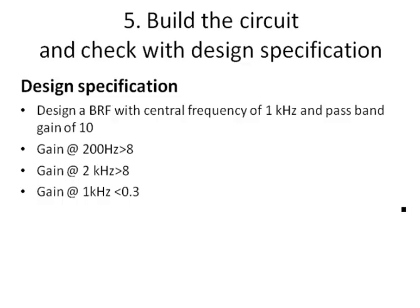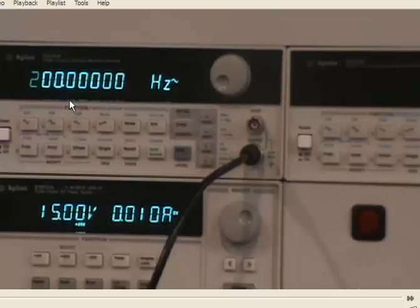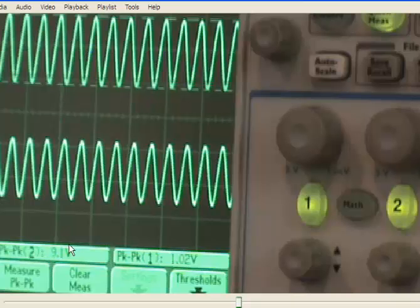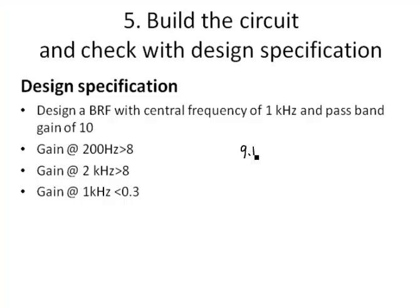Let's build the circuit and check it against the design specification. When the input is at 200 Hz, the gain of the circuit should be at least 8. After adjusting the input to 200 Hz, the output voltage is 9.1 V and the input voltage is 1.02 V. The gain of the circuit is 9.1 over 1.02, which is apparently greater than 8, so it meets the design specification.